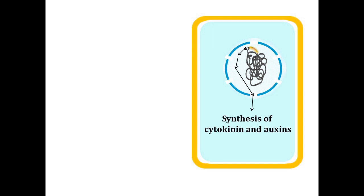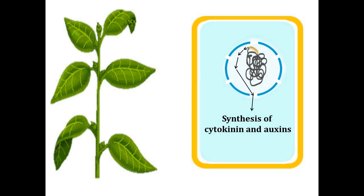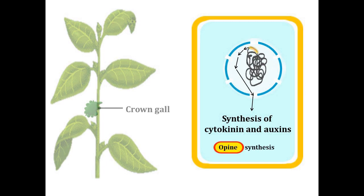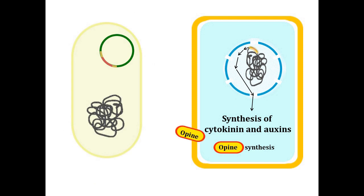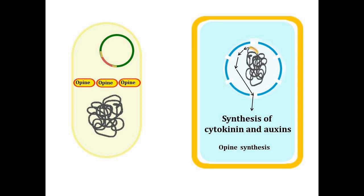A number of genes encoded in T-DNA become expressed in plant cells. Some of the gene products are responsible for synthesis of the plant hormones cytokinin and auxin, which trigger plant cells to divide rapidly and form an undifferentiated mass known as crown gall tumor. T-DNA also controls production of unusual amino acid derivatives called opines. In return for delivering T-DNA to plants, the bacterium gets opines as a source of nitrogen.